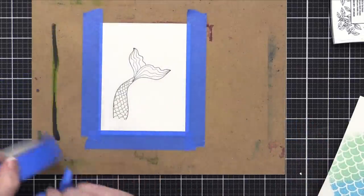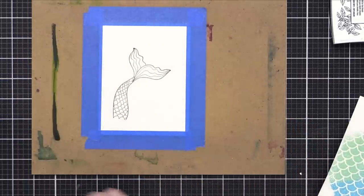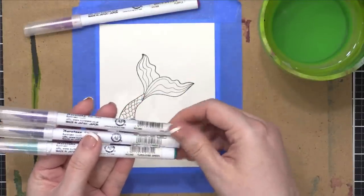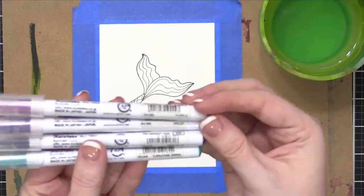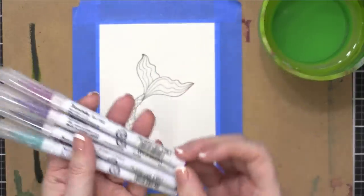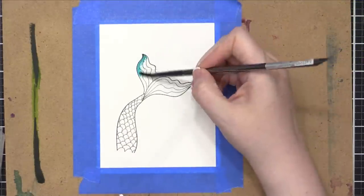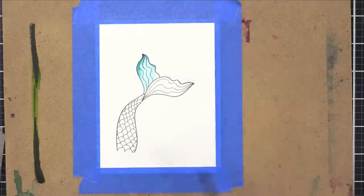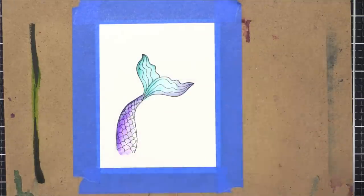I taped down my stamped piece to a hard surface. This is a hard board. And then I'm going to be using four, but eventually five, colors of the Zig Clean Color Real Brush markers. I've got violet, purple, deep blue, which I'll change to peacock blue, and turquoise green. So I'm going to speed up while I'm painting here so you can see the entire process, but basically I'm adding a little bit of color directly from the marker onto this image. And then I bring in a wet paintbrush and spread out that color.